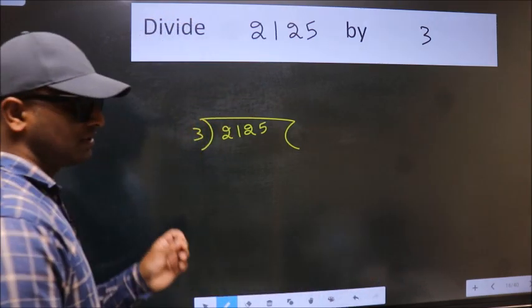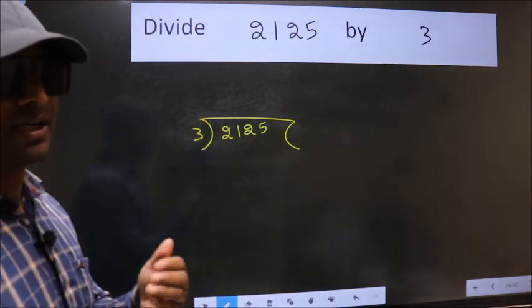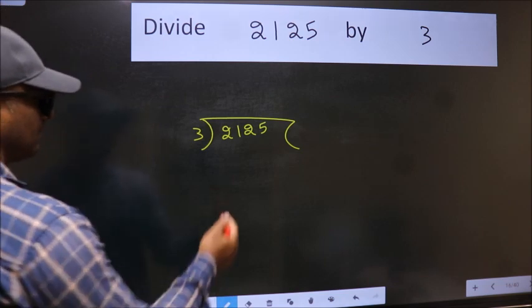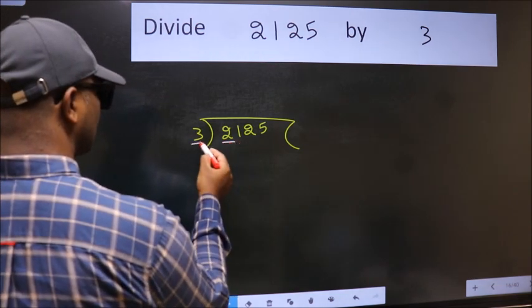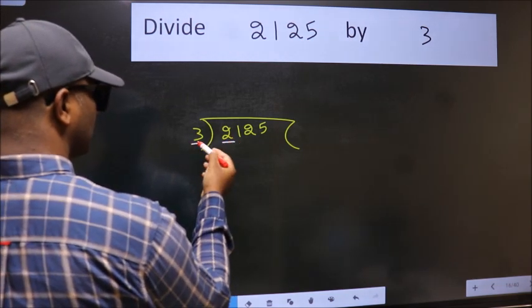This is your step 1. Next, here we have 2 and here 3. 2 is smaller than 3.